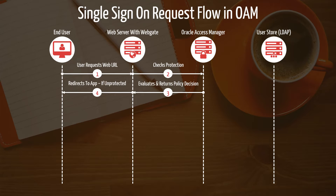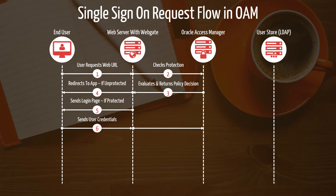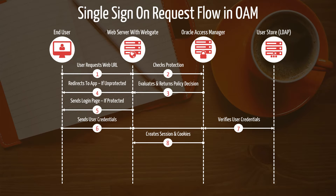If the resource is protected, OAM determines how it is protected based on the policies set by administrators. There are different ways of protecting an application, which I'll show later in this video. In most cases it will be LDAP-based authentication, but many other authentication methods are available in OAM. So OAM sends the login page — also referred to as the credential collector — to the end user. The user provides credentials, which are sent to OAM through WebGate. OAM connects to the backend user store and validates the credentials. At this stage OAM creates two cookies: OAM_AuthentCookie and OAM_ID.